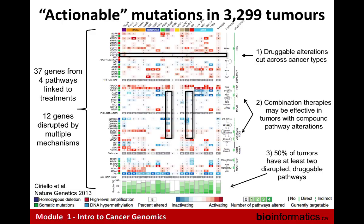The lessons from the study: each column is a cancer type, each row is a gene, grouped into pathway themes. First, genomic alterations cut across cancer types — FGFR activation happens in bladder and other cancers, so the idea of one drug per cancer type is falling away. Second, combination therapies are effective in tumors with compound pathway alterations — cancers with activation of both the PIK3CA-AKT pathway and the CDK pathway present potential for combination clinical trials. At least half the tumors had at least two disruptive drugable pathways, calling for combination therapies rather than hitting pathways one by one.